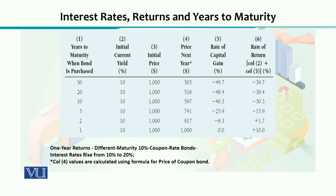We have discussed the price of capital gain. Capital gain is basically the difference between the current price and the previous time period's price, divided by the previous time period's price — or initial price. In this example, this would be the price next year, 503 minus 1000, divided by your initial price. So you have a rate of capital gain.